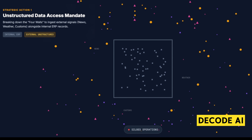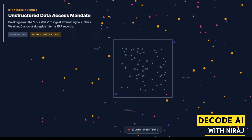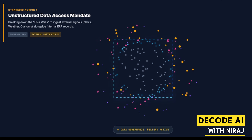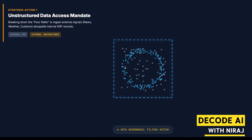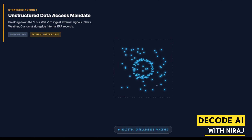Strategic Action One: Unstructured Data Access Mandate. Mandate that your supply chain technology initiative prioritize the ingestion of external unstructured data sources — news feeds, custom data, meteorological data, financial filings — not just internal ERP records. We must break down the data silos between your four walls and the rest of the world. This requires a dedicated data governance strategy focused on external sources.